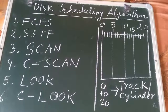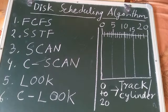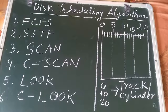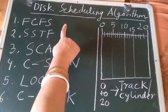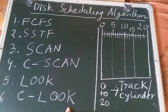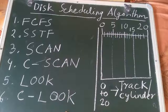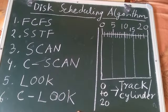Today we will start with disk scheduling algorithms. Before this, all of you must watch the previous two videos on disk architecture and disk access time — without that, this video will not be fully clear. There are six disk scheduling algorithms: FCFS, SSTF, SCAN, C-SCAN, LOOK, and C-LOOK. We will cover all six algorithms one by one with example problems.